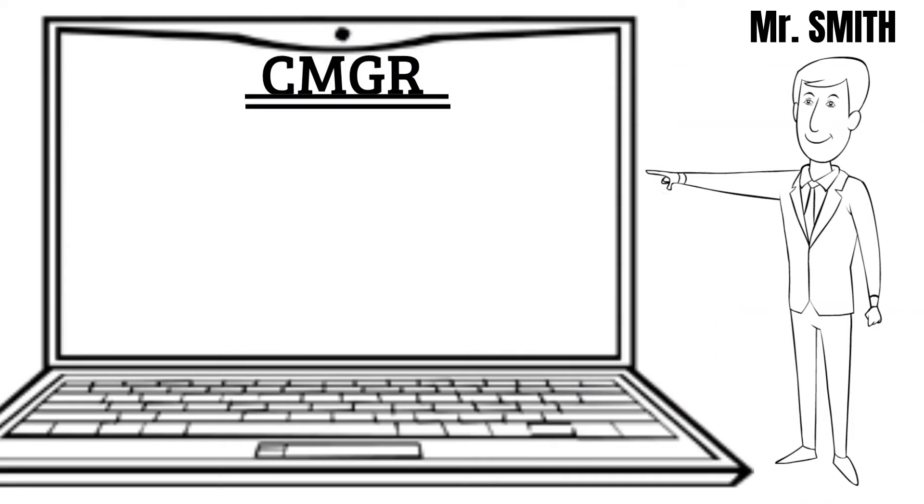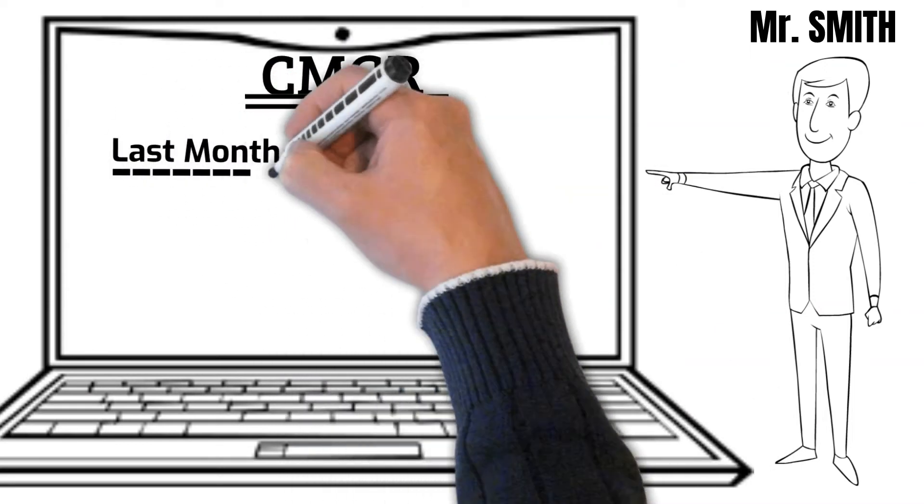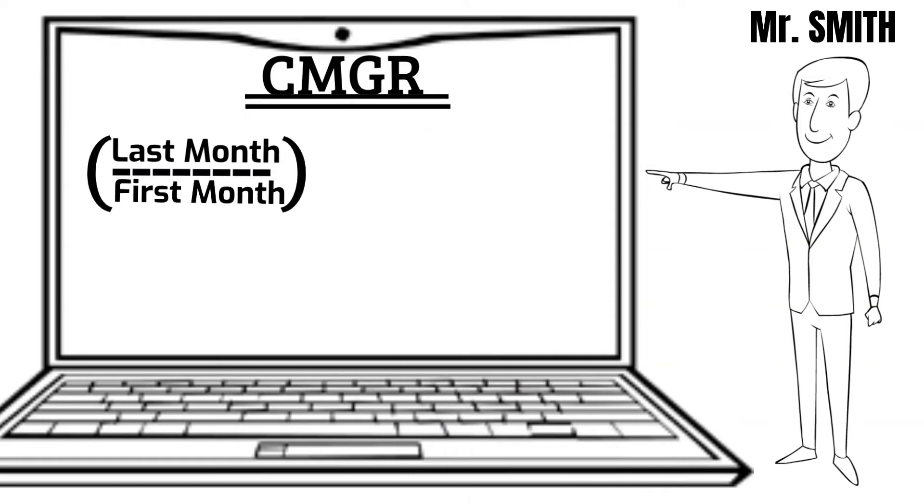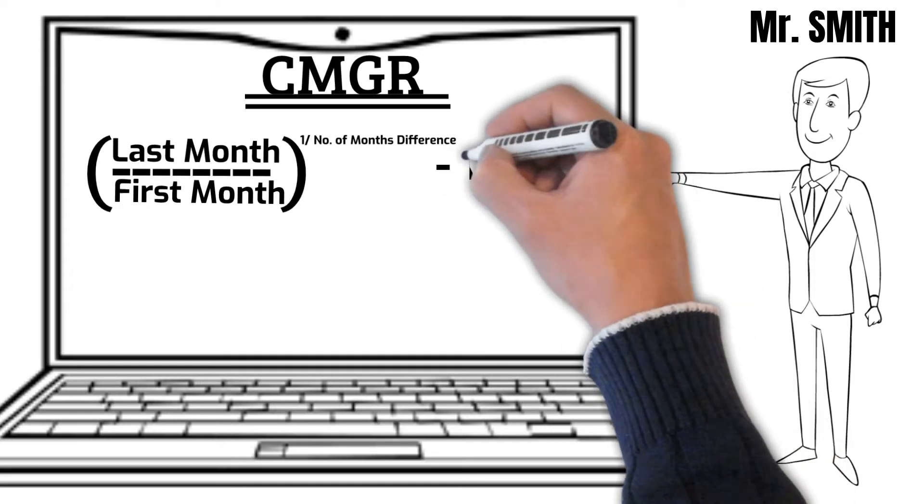CMGR equals the last month's number divided by the first month's number to the power of 1 divided by the number of months difference between the first and the last month. Deduct 1 from the whole expression.